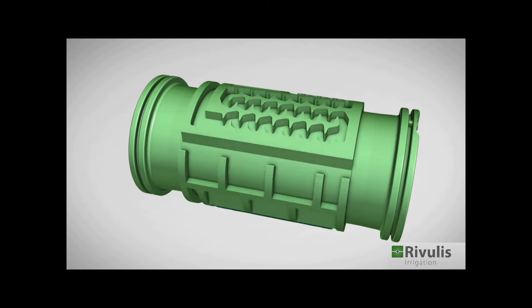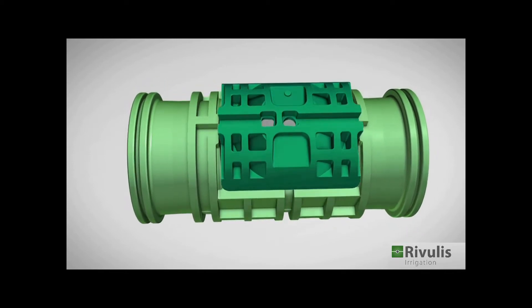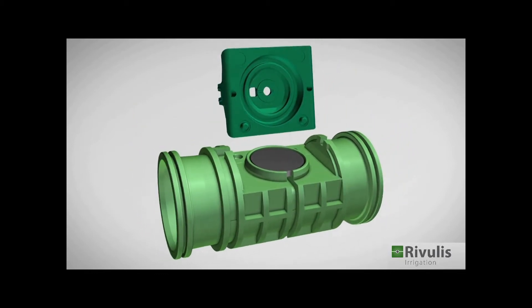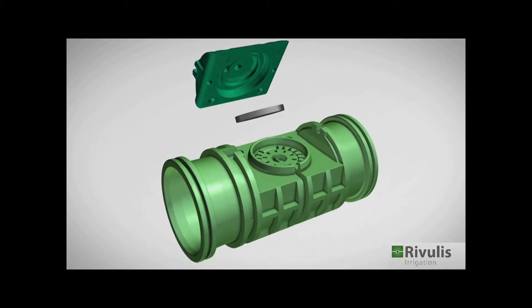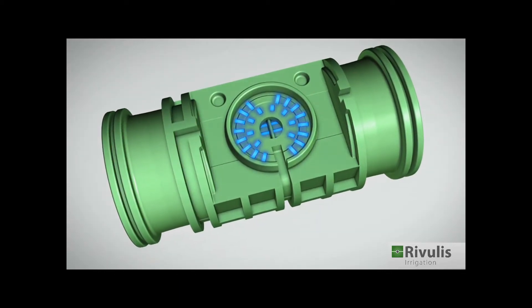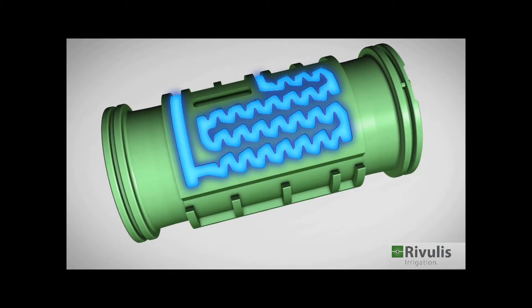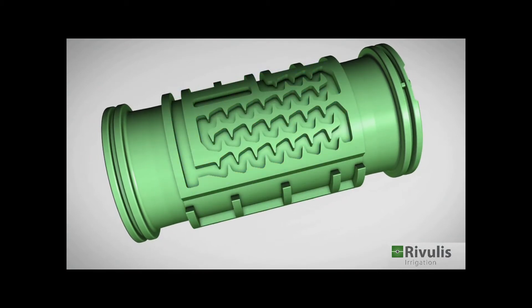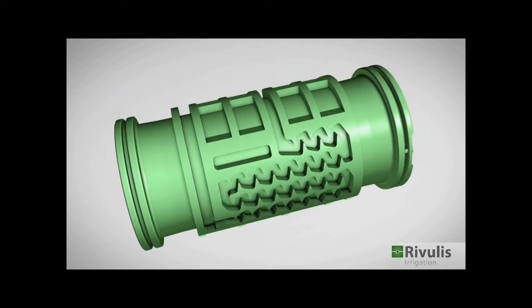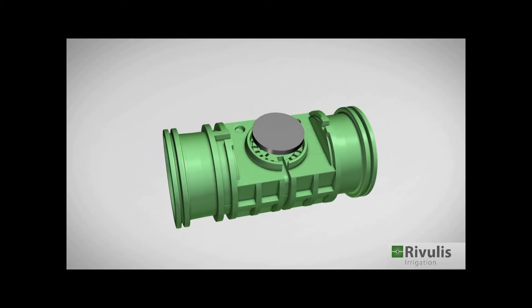The Hydro PC is a flow regulating dripper made up of three parts: the dripper body, the top cover, and the flow regulating diaphragm. Each dripper has its own inlet filter with a large filtering area, an efficient and accurate labyrinth, and two outlet chambers with a connecting channel.